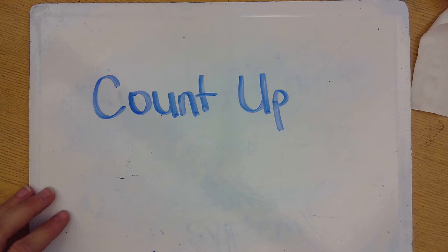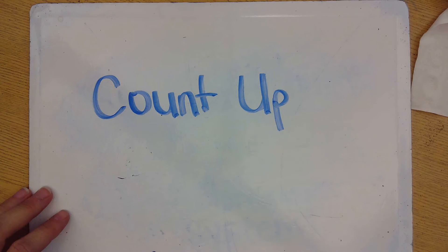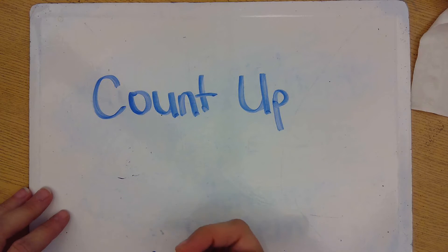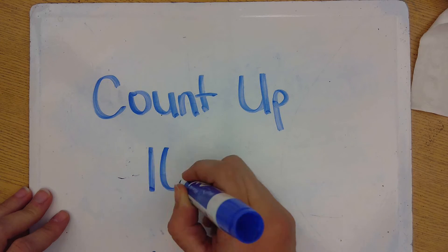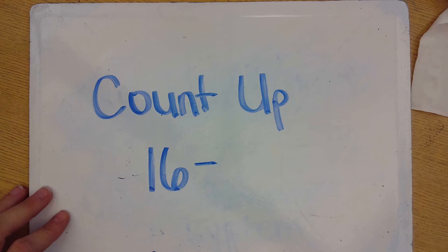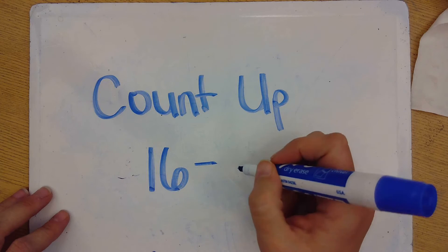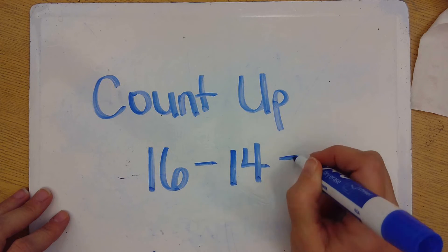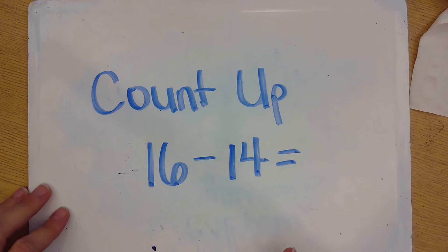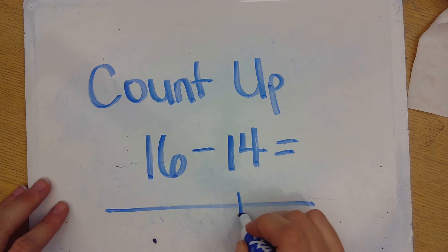The next subtraction strategy that we want to review is the counting up strategy. When we have a subtraction problem where the numbers are pretty close together on a number line, for example, 16 minus 14, I know that on a number line, if 16 were here, 14 would probably be somewhere around there.